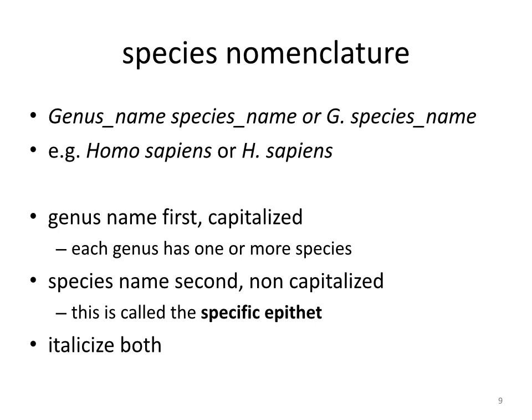In species nomenclature, it goes genus name first, then species name — or abbreviated as G. species name. Homo sapiens or H. sapiens should be italicized. The genus name is first and capitalized; each genus has one or more species. The species name comes second and is non-capitalized. This is called the specific epithet. Italicize both parts.